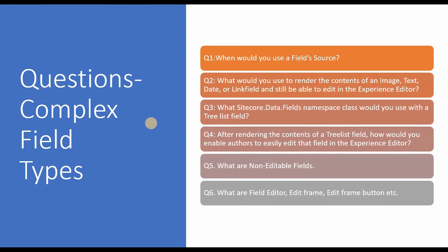The fourth question is: after rendering the contents of a tree field, how would you enable authors to easily edit that field in the experience editor? The fifth question is: what are non-editable fields? The sixth question covers terms you should be aware of: field editors, edit frame, and edit frame button — what are these terms and how do you use them?